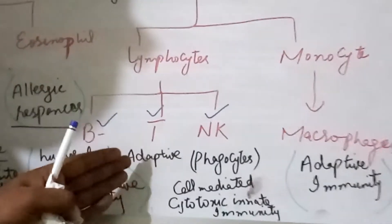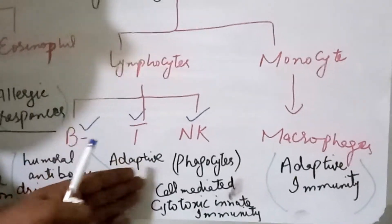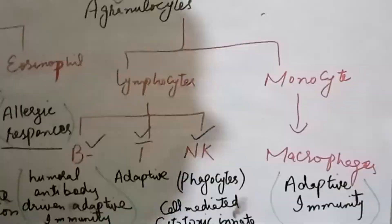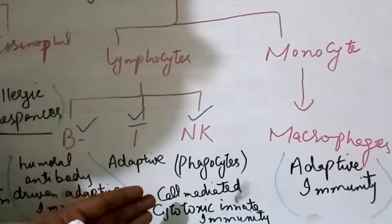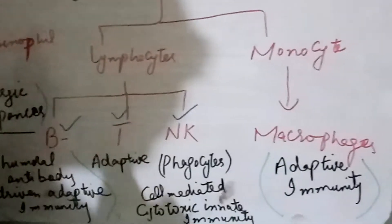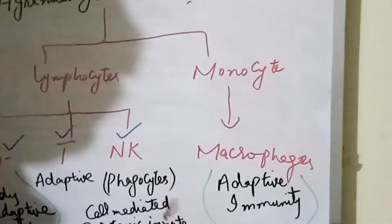T lymphocytes are basically for cell-mediated toxic adaptive immunity while natural killer cells are basically termed as phagocytic cells and they are for cell-mediated cytotoxic innate immunity. Monocytes are further differentiated into macrophages and they are for adaptive immunity.